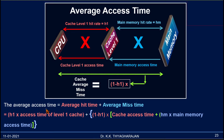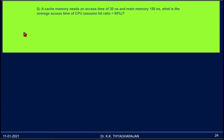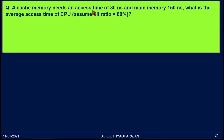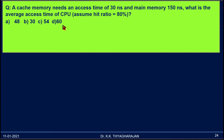Now let us see a problem. A cache memory needs an access time of 30 nanoseconds, and main memory needs 150 nanoseconds. What is the average access time of the CPU? Assume a hit ratio of 80%. The options are: A) 48, B) 30, C) 54, D) 60.